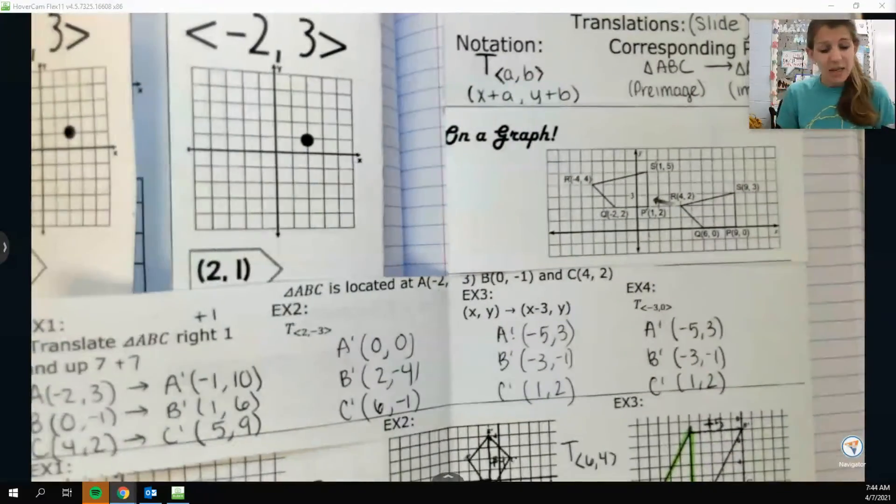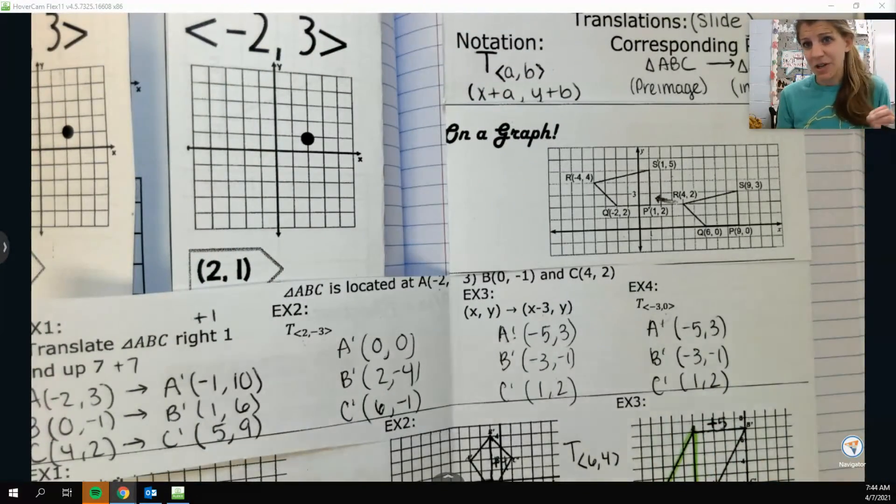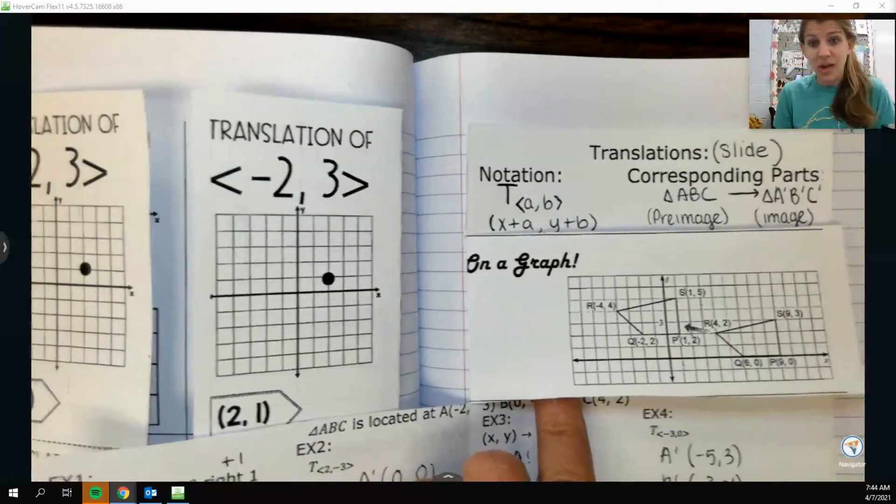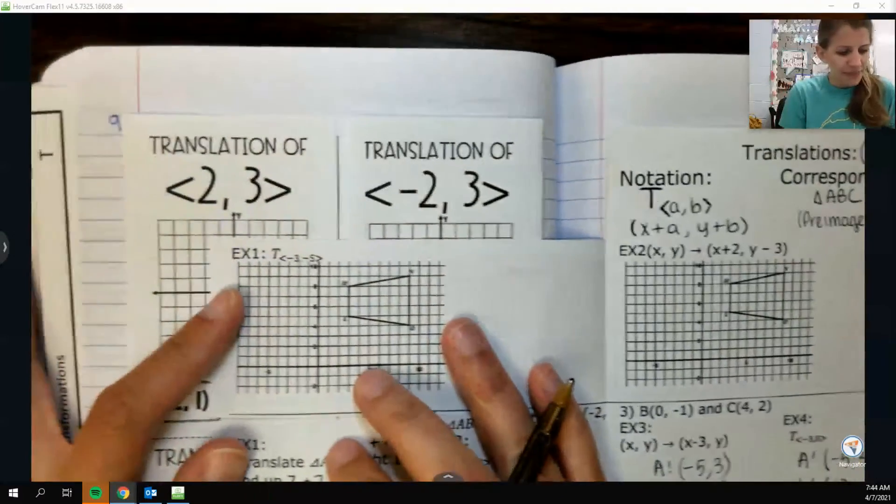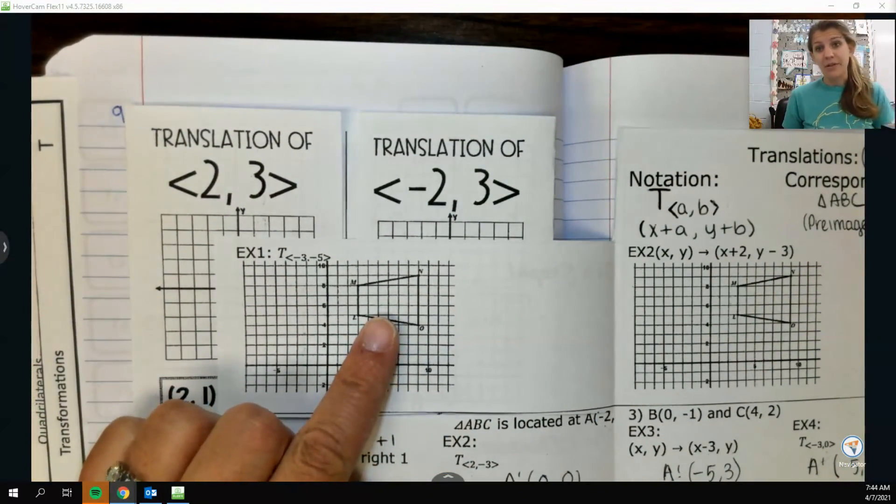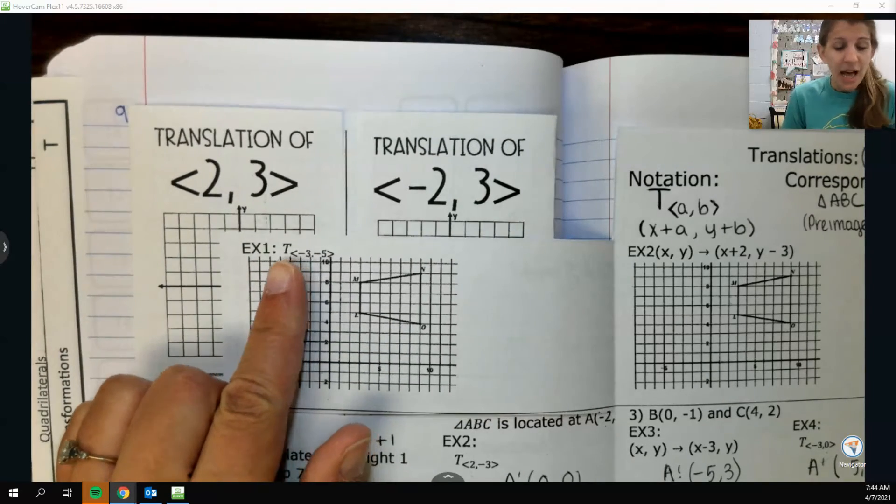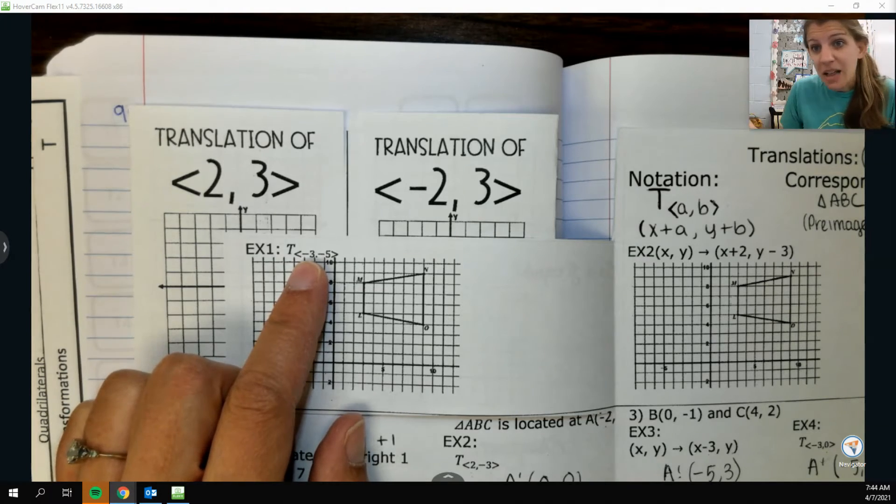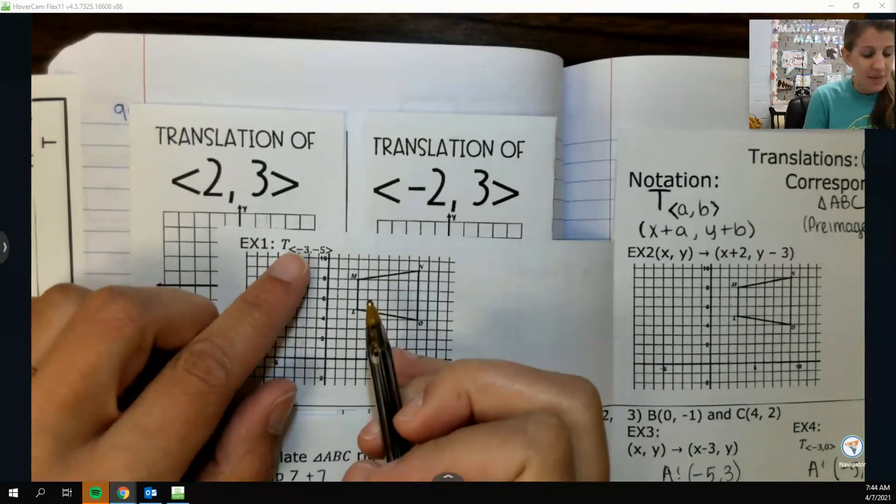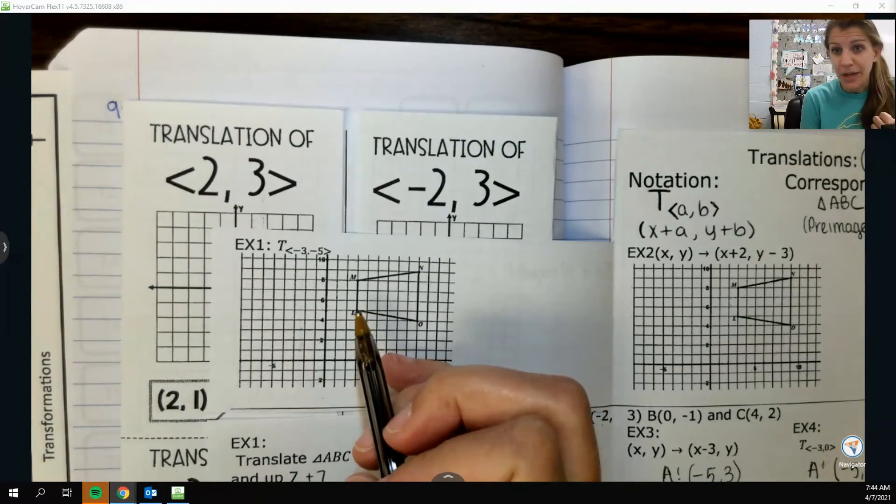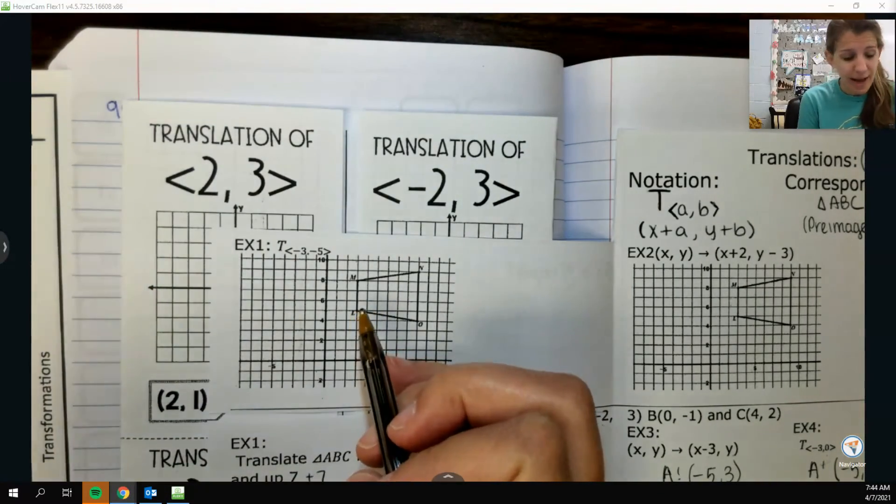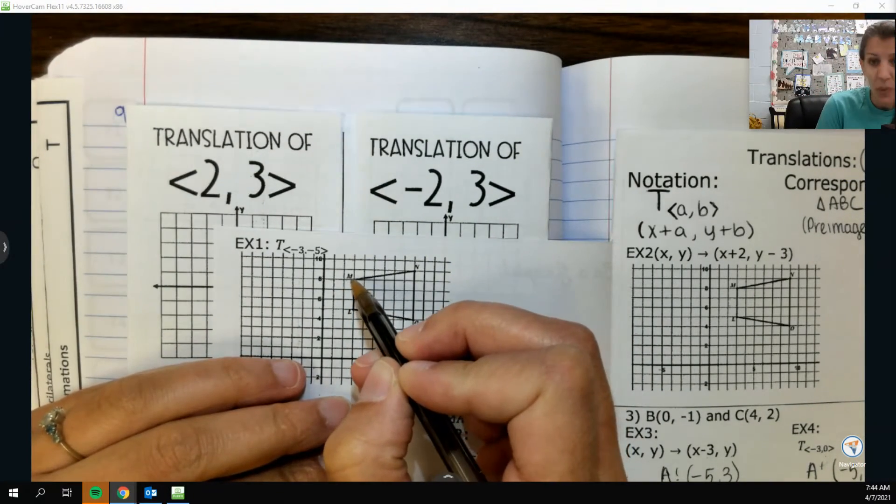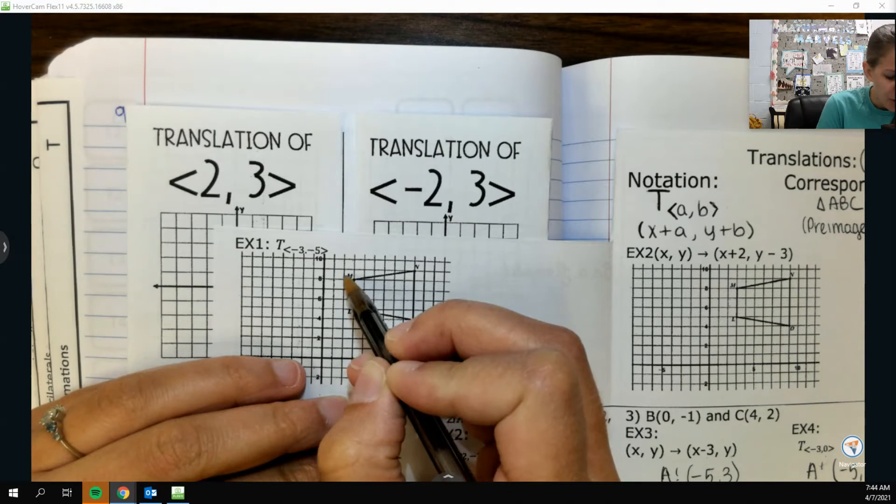The only other thing that you might do is, if you don't love to think about it in your head and add and subtract numbers, which I mean, why wouldn't you, you could also just do it on a graph. For example, if they give you an image right here and they tell you to capital T, negative 3 comma negative 5, they're telling you how to move it. The negative 3 means I'm going to go left 3. The negative 5 means I'm going to go down 5. I could just take each point and do that. If I take M and I go back 3, down 5, 1, 2, 3, 4, 5, that is where new M prime is going to go.